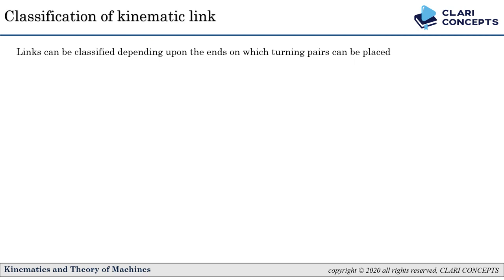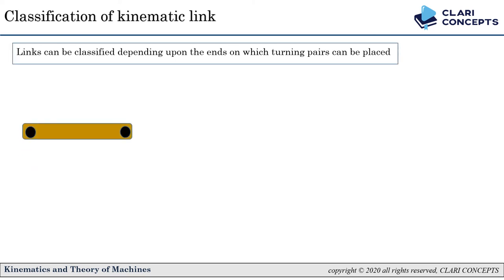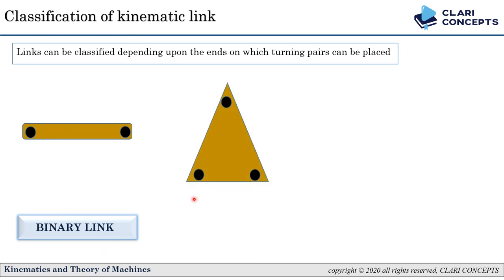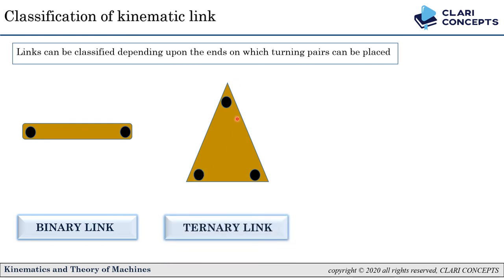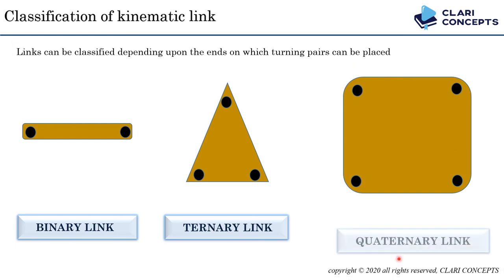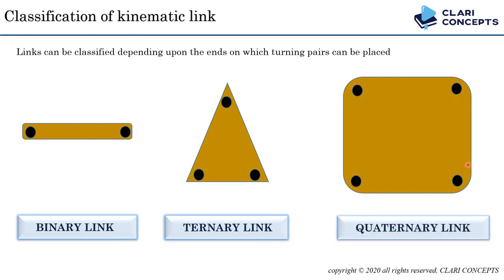A Kinematic Link (or simply link or element) is defined as a member or combination of members of a mechanism connecting other members and having motion relative to them. In a slider crank mechanism there are four links: the crank (rotating disc), the connecting rod (connecting slider and crank), the slider, and the fixed link (frame). These are all kinematic links because they are members of a mechanism with relative motion between them. Kinematic links are classified as: Rigid Link, Flexible Link (e.g., a belt — flexible enough to turn on a pulley), and Fluid Link (e.g., brake fluid transmitting motion). Links can also be classified by the number of nodes: a Binary Link has two ends/nodes, a Ternary Link has three nodes, and a Quaternary Link has four nodes where other links can be connected.